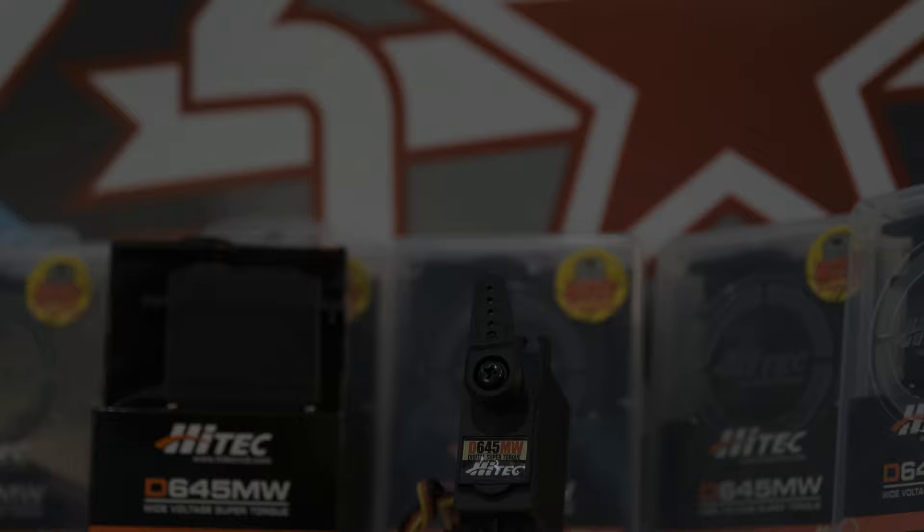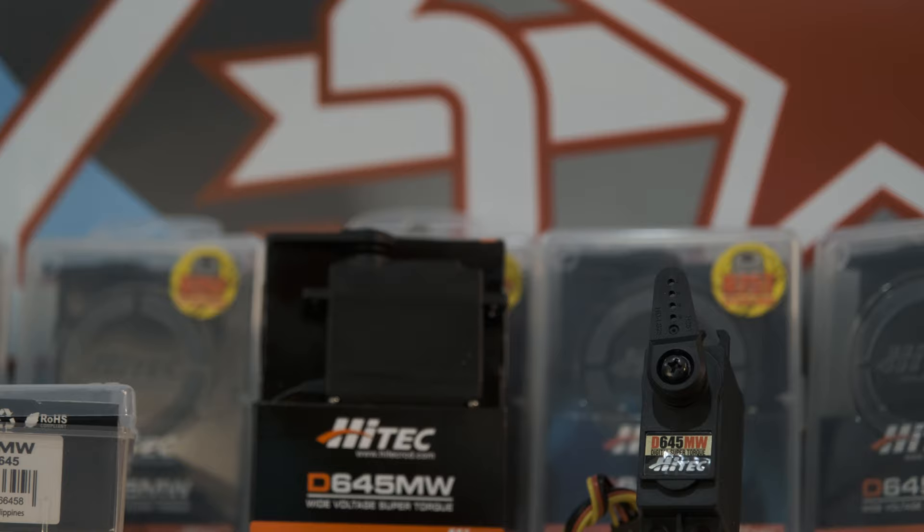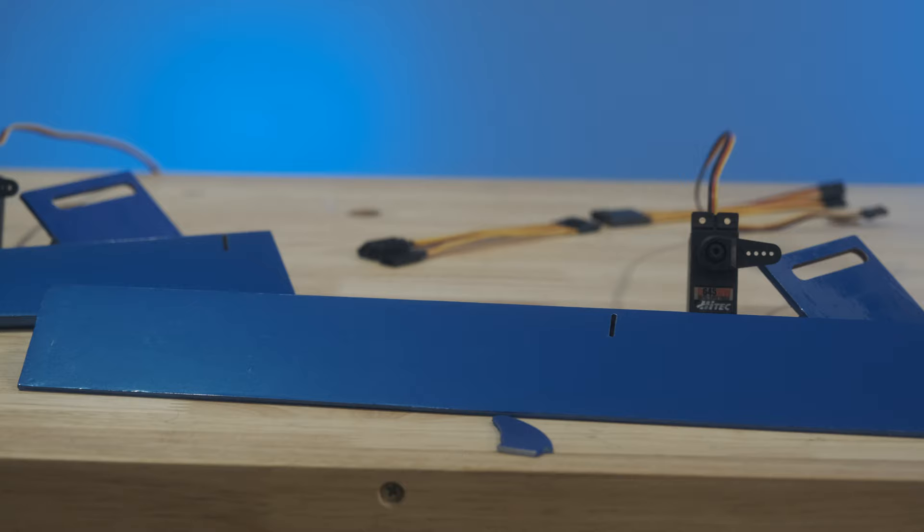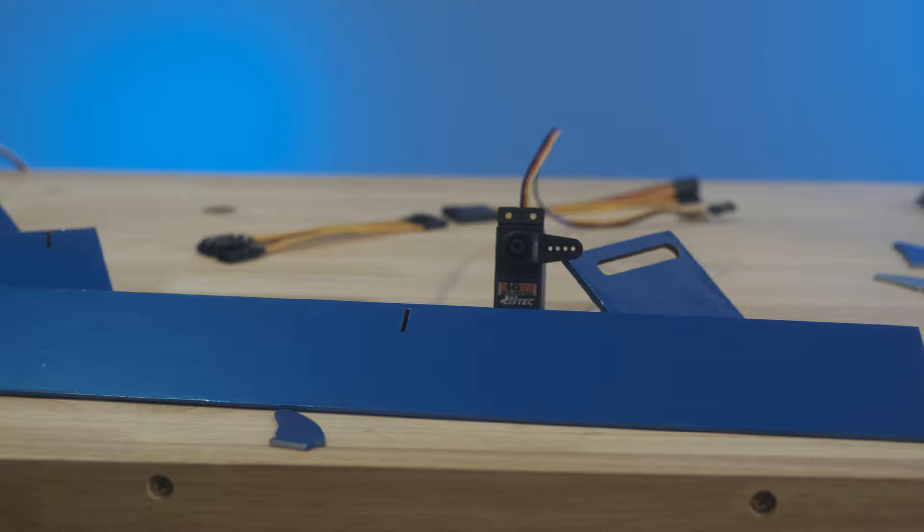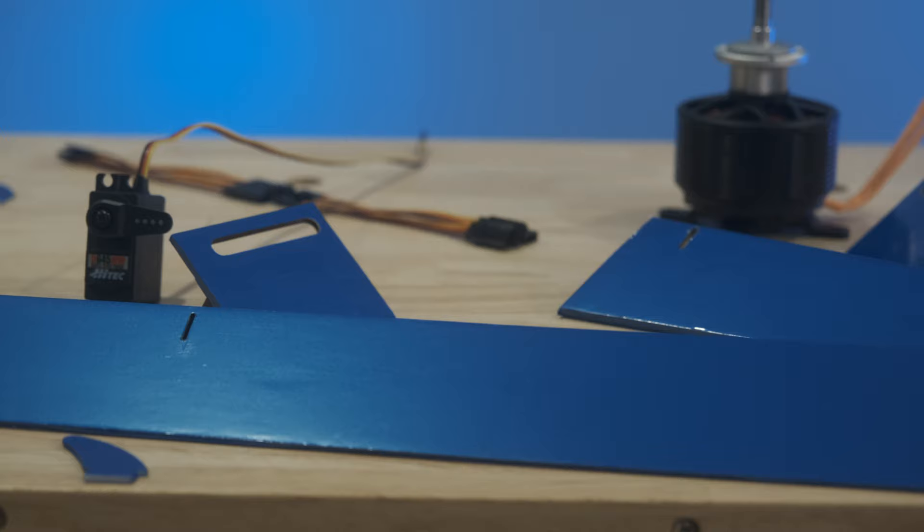To start things off, we are going to be using the Hitec D645MW servos. This is my favorite modern standard servo - it's programmable, it's digital. Here are all the parts laid out: the ailerons, the flaps, the control horns, the servos, the servo pockets. We even got these custom three servo connectors we're going to be using for the first time. This is everything we're working with, and even a shot of that Dual Sky GA 3500R.